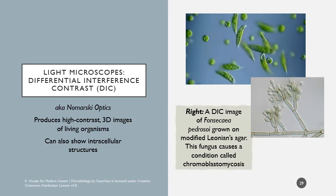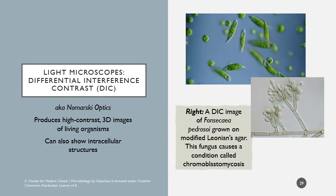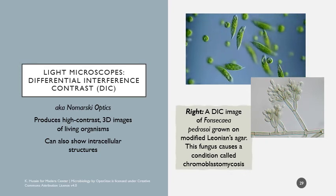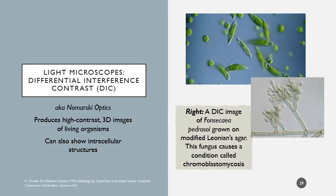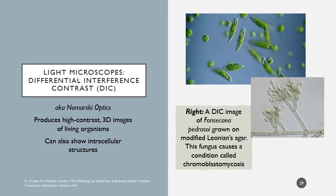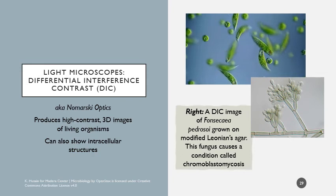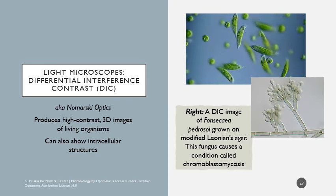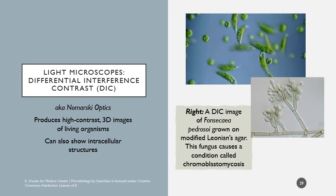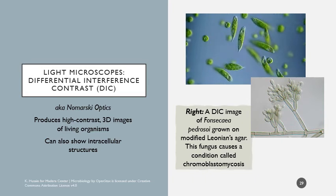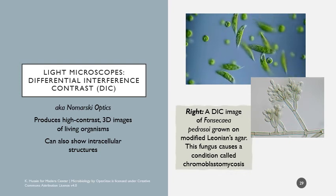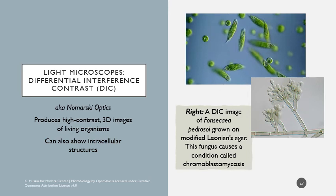Another type is differential interference contrast, or DIC — also called Nomarski optics. This produces high contrast 3D images, often of living organisms. For example, living euglena protists can be observed: they have a red eye spot for sensing light, a flagellum for movement, and chloroplasts for photosynthesis. DIC allows us to observe these physiological structures in living organisms in real time.